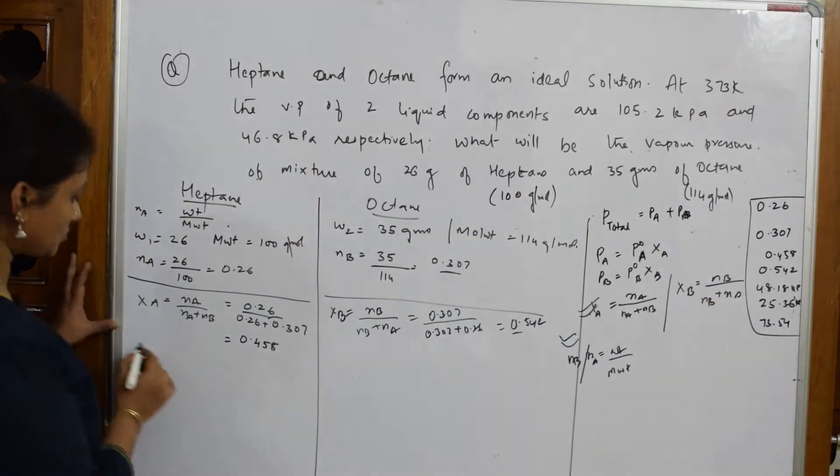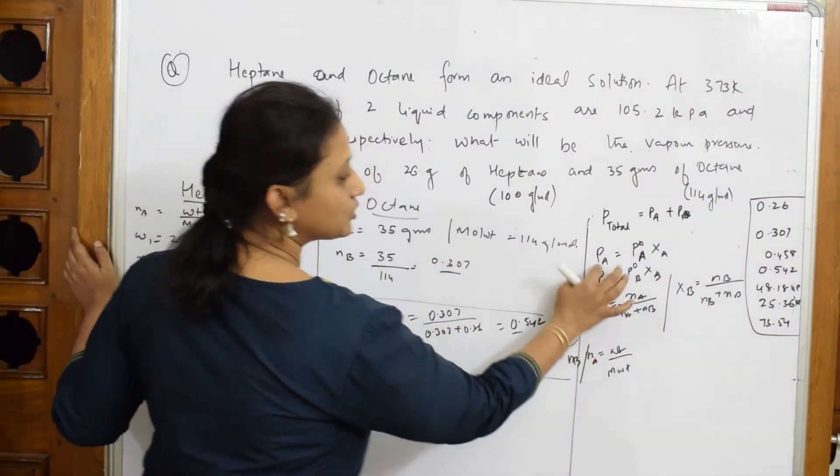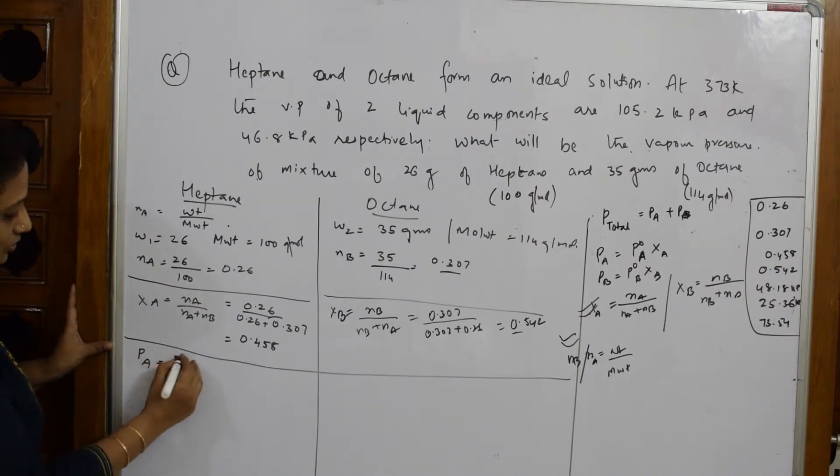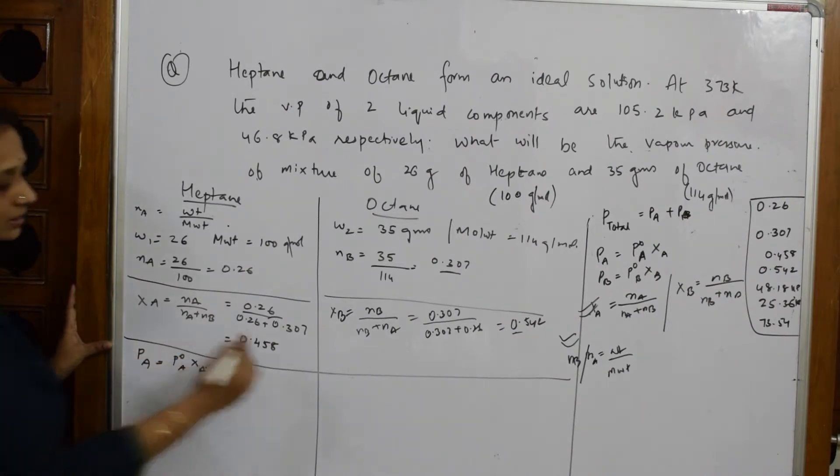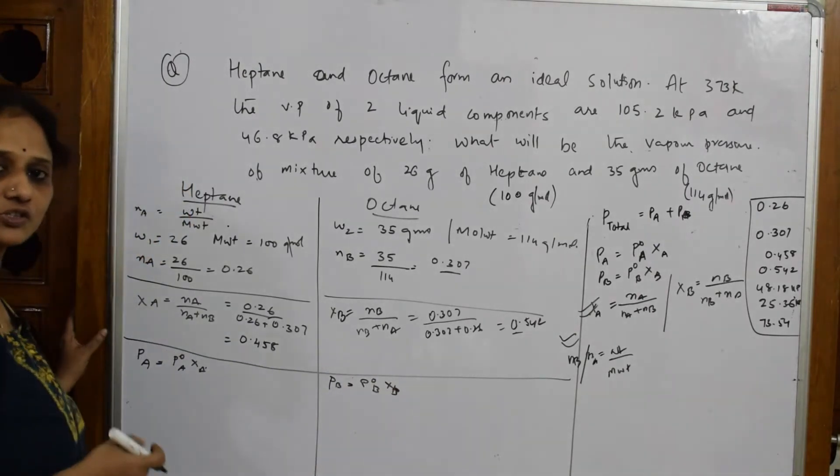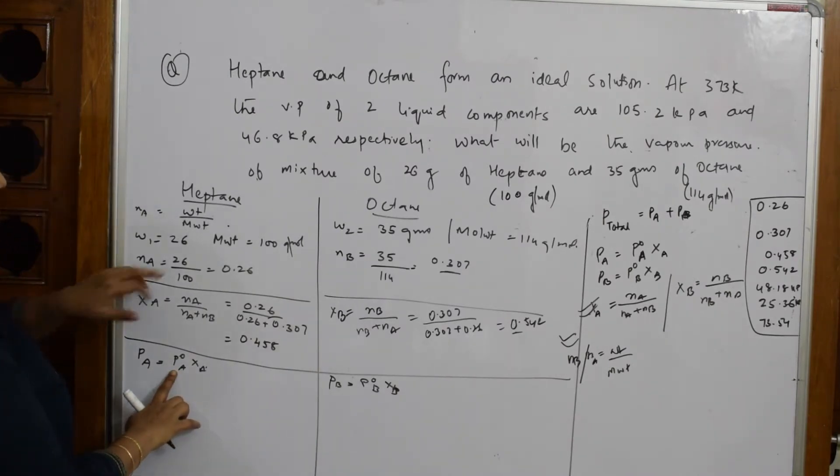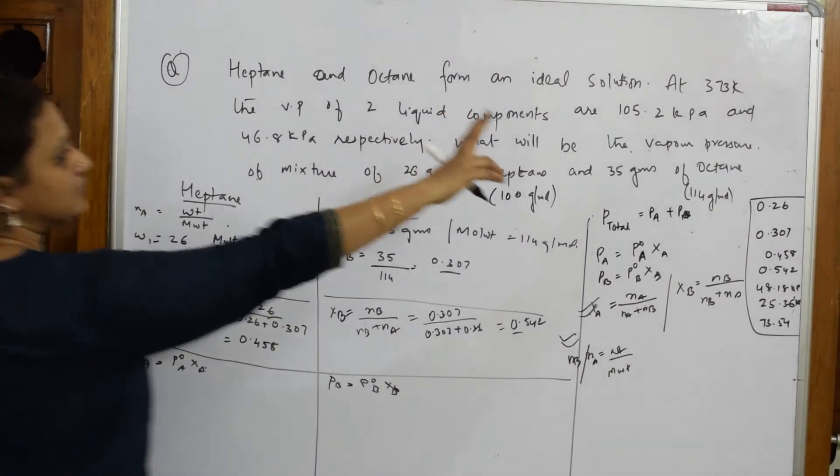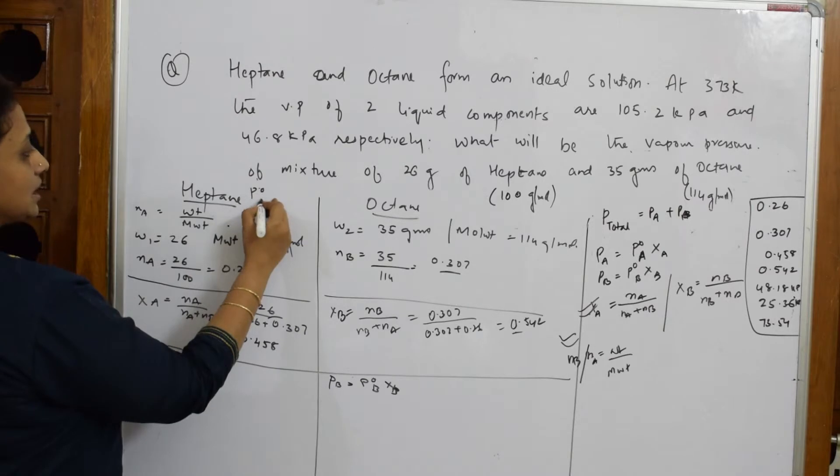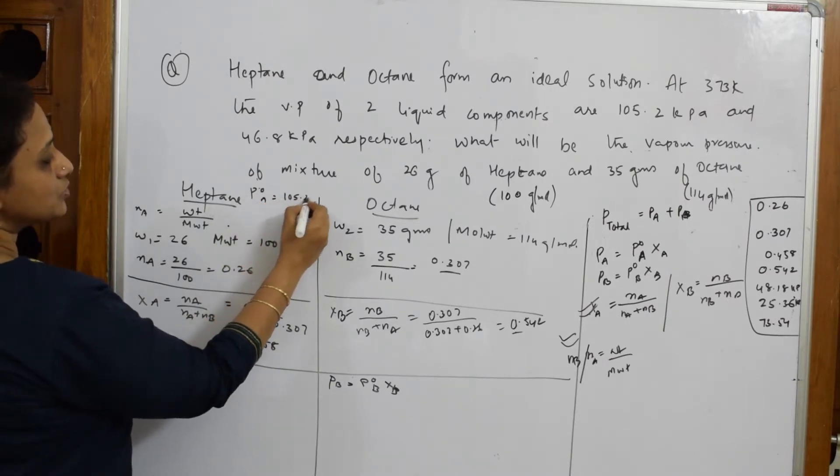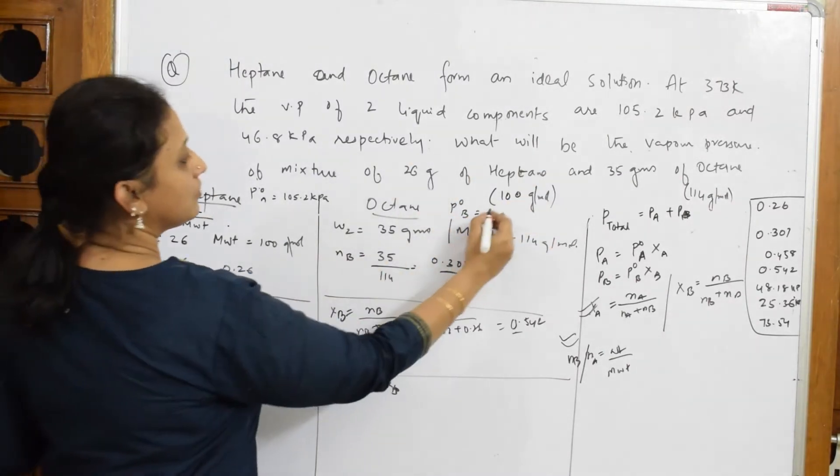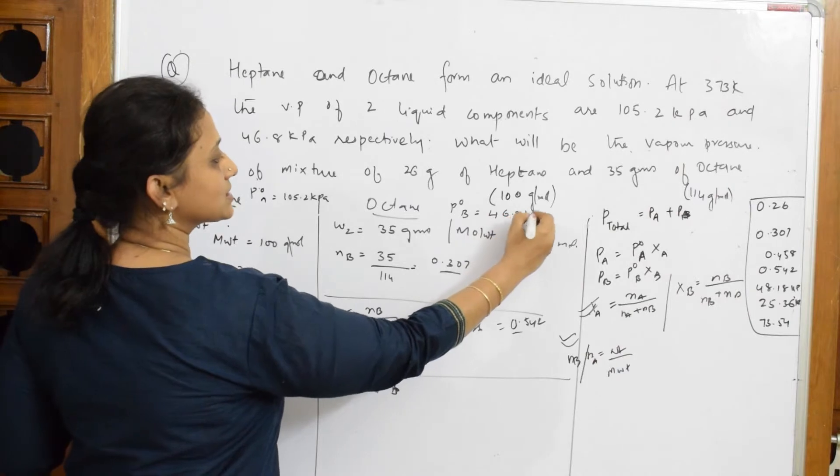Now, let us come back and solve the next formula. What is the next formula? I have to do because I have to take to calculating the P total. PA is equal to P naught A into XA. Here, PB is equal to P naught B into XB in this case. What is P naught A given to us here in the mixture? I have given 2P. The pressure of liquid components 100 and 05. For heptane, P naught A given is 105.2 kilopascals. For octane given is 46.8 kilopascals. This is given to us.